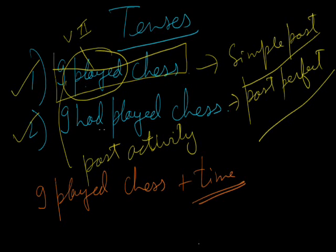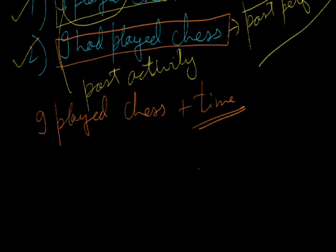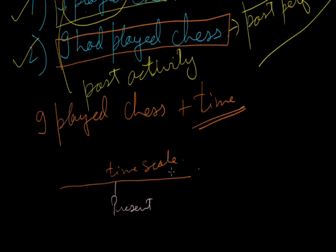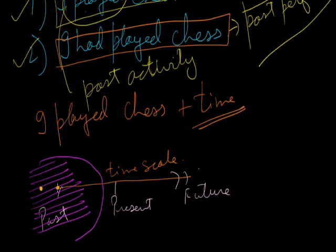Coming on to the second example, 'I had played chess' — grammatically, the sentence is incomplete. Now, past perfect, if we take this time scale: this is the present, this one is future, and this one is past. Whenever we talk about the past time, we never touch the present; past always takes the past time. If we go by the definition of past perfect tense, it means an action that finished earlier than some other action in the past time.